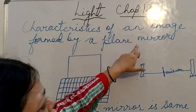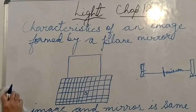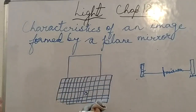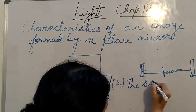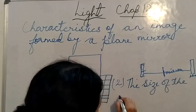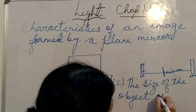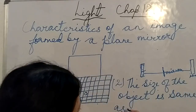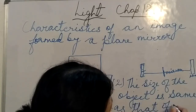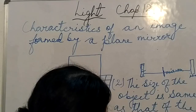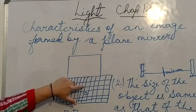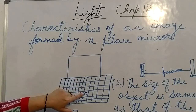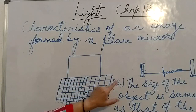The second characteristic feature is that the size of the object is the same as that of the image. If the object is of a certain size, the image formed in the plane mirror will also be of the same size. Both will be of equal size.